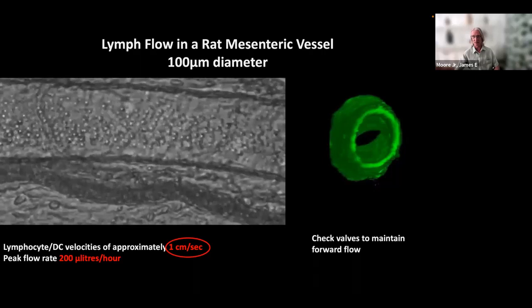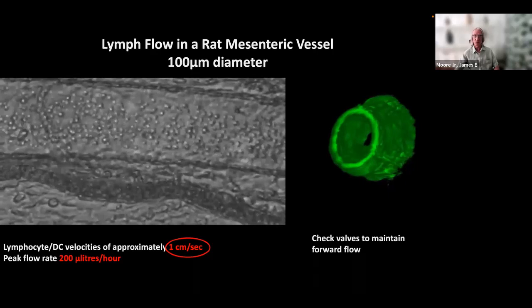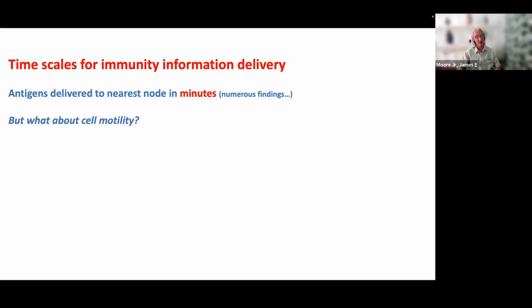I'm going to focus on what goes on in terms of information delivery within the lymph nodes. In terms of delivery from the periphery into the lymph node, numerous experiments in rats, mice, humans, and guinea pigs show that when you have some antigen delivery into the periphery, it goes into the lymphatic system and will show up in the nearest lymph node within minutes. This suggests that the transport provided by lymphatic pumping is very important.